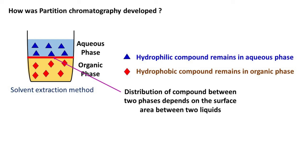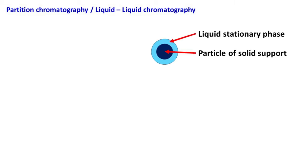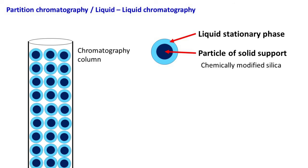Based on this simple concept, scientists developed a chromatography technique known as liquid-liquid chromatography. In this chromatography technique, the particles of solid support are coated with liquid stationary phase. The solid support particles are usually made up of chemically modified silica that can hold liquid stationary phase around itself. These particles coated with liquid stationary phase are packed in the column.